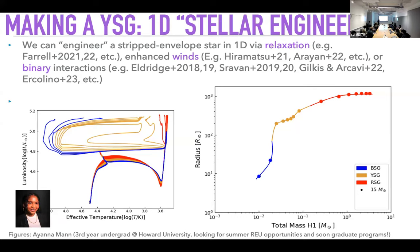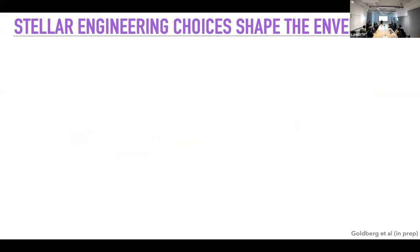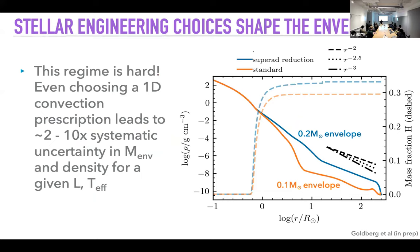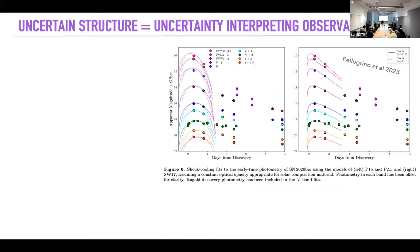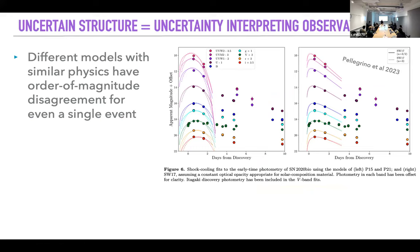What you assume about the density profile — how you treat convection in 1D, mixing length theory, what you do with the super-adiabatic excess at the surface — causes factor-of-2 to factor-of-10 differences in both the recovered envelope mass for a given radius and luminosity, and also changes the entire slope of the density profile. Every code has a trick to stop these stars from blowing themselves apart, and those tricks cause real differences. When you apply various semi-analytic scaling models to observations, different models with similar physics can have orders-of-magnitude disagreements for even the same event.